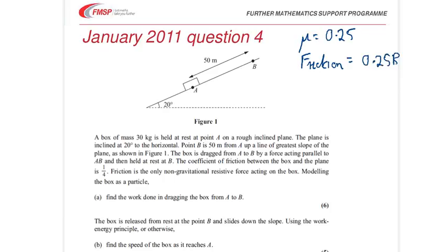Okay, so to find the work done in dragging the box from A to B, let's just think about the energy changes that happen. We're going to have a work done against friction, and we're going to have a gain in potential energy, gravitational potential energy. So, on the next slide, there will be room to put that in.